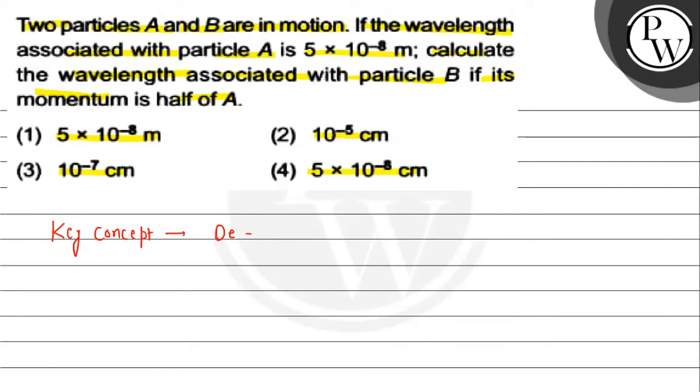de Broglie equation, which is Lambda equal to h upon m into v, or you can say h upon p, where p is equal to m into v.